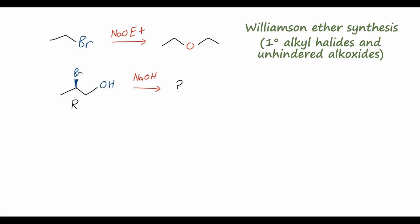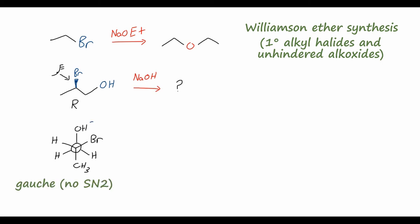We can draw a Newman projection looking down the two relevant carbons. The front carbon has a methyl group pointing down, bromine pointing up and to the right, and a hydrogen up and to the left. The rear carbon has the OH going up and two hydrogens pointing to either side. This tells us that SN2 reactions require backside attack of the nucleophile, and in this configuration the OH — which will be the nucleophile after deprotonation by sodium hydroxide — is not anti to the bromine, which we need for that backside attack.